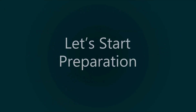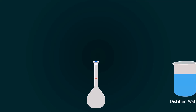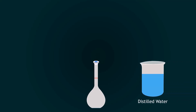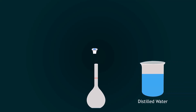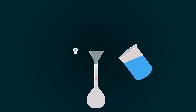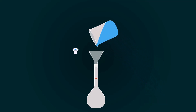Let's start preparation. First of all, take a 500 ml volumetric flask and add some distilled water into it with the help of a funnel. Please avoid adding sulfuric acid directly into the flask, because it may harm you or the flask.